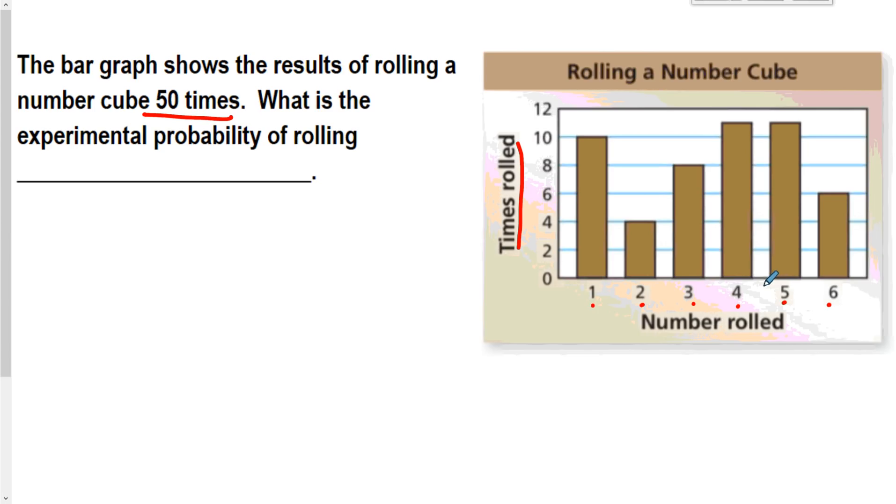I'm going to try and find what is the experimental probability of rolling an odd number. Now, we just kind of know that rolling an odd number on a number cube, I should get about one half of the time. But is that true? Did that actually happen in this experiment? So let's take a look. I rolled a 1 right here. So this tells me I rolled a 1. I look over here, I rolled a 1 ten times.